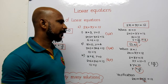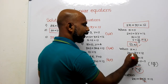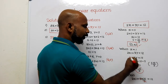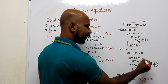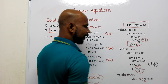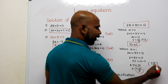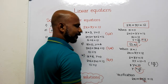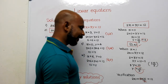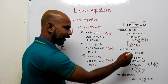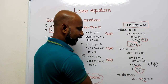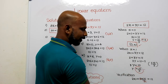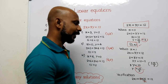Then I took x equal to 1 and applied it to the same equation: 2 into 1 plus 3y equal to 12, so 2 plus 3y equal to 12, therefore 3y equal to 10, giving y equal to 10 by 3. So another solution is (1, 10/3). To verify: 2 into 1 plus 3 into 10 by 3 — the 3 cancels — gives 2 plus 10 equal to 12. Verified.